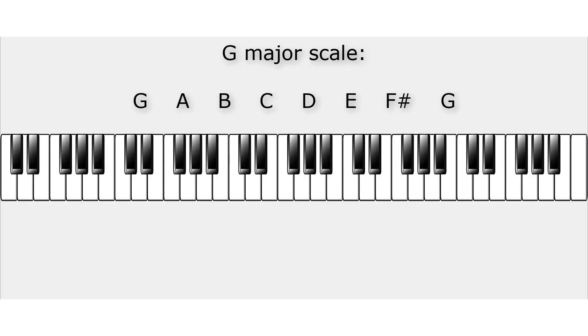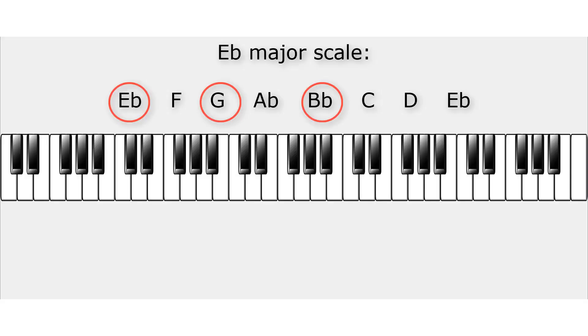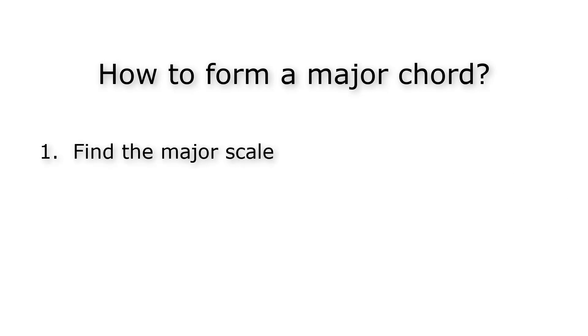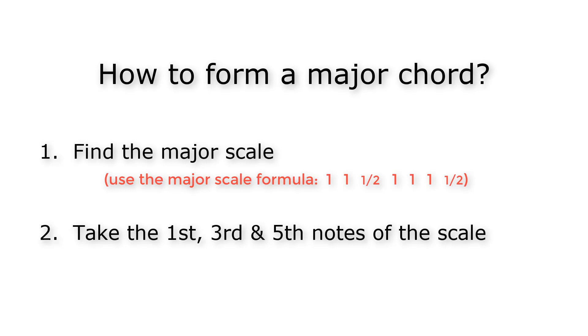Let's find the G major triad. The first, third and fifth notes of the G major scale are G, B and D — that is the G major triad. Now the E-flat major triad: the first, third and fifth notes of the E-flat major scale are E-flat, G and B-flat, which form the E-flat major triad. So in general, when you want to know how to form a major triad, you first need to know the major scale — use the formula one, one, a half, one, one, one, a half — then pick the first, third and fifth note of the scale and you have the major triad. It's as simple as that.